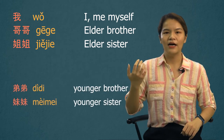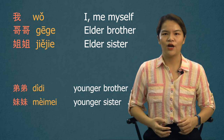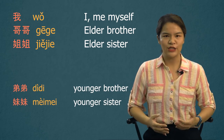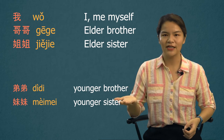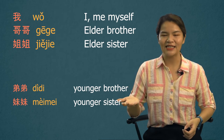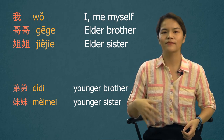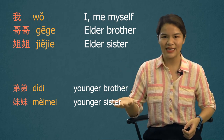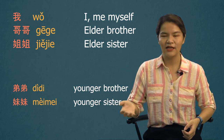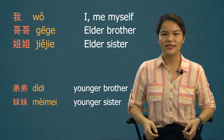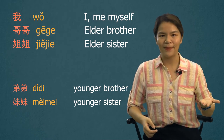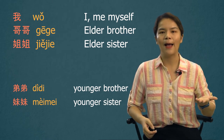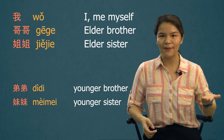How about younger brother and sister? Younger brother is 弟弟 (dìdi). Younger sister is 妹妹 (mèimei).